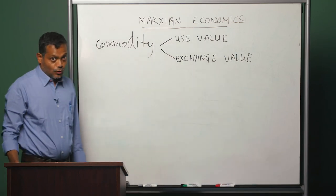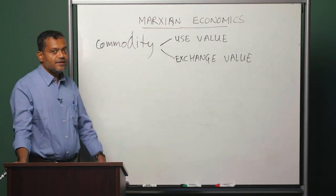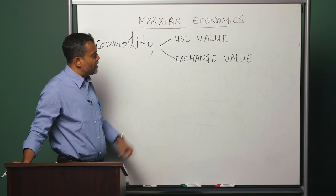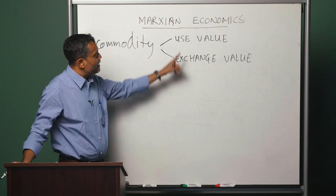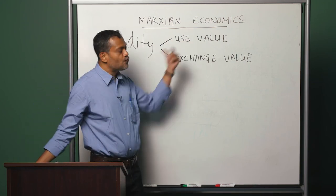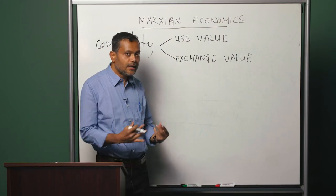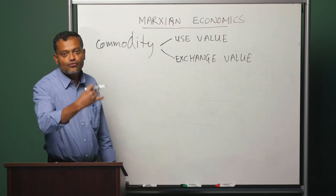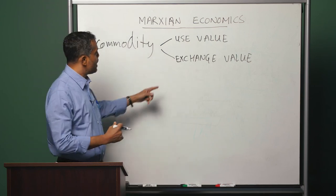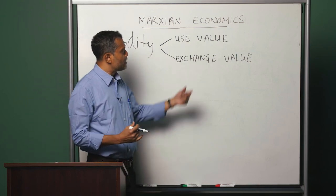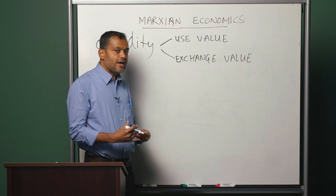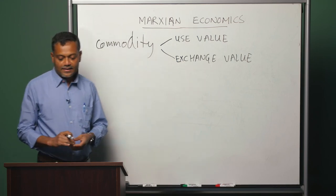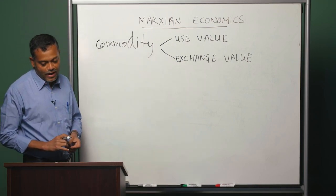To summarize: a commodity is anything which is produced for exchange, and it has these two aspects. It is useful to somebody — and we say therefore it has use value — and it can be exchanged with other commodities, and therefore it has exchange value.